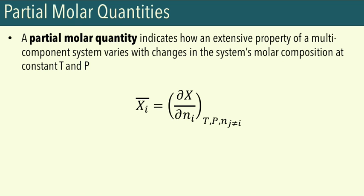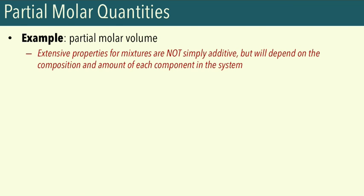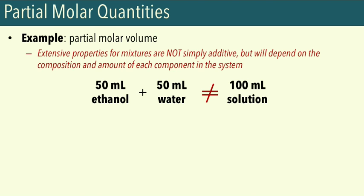Now that we've defined partial molar quantities, why do we need to consider them? Partial molar quantities are important because we use them to determine the extensive property of the whole system. It's very important to note that extensive properties for multi-component systems are not simply additive — the components will inevitably interact with one another. A tangible example is partial molar volumes: from experience, you know that volumes are not additive. When we mix 50 mL of ethanol and 50 mL of water, the total volume will not be 100 mL.